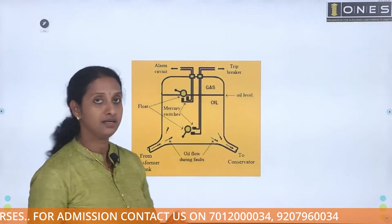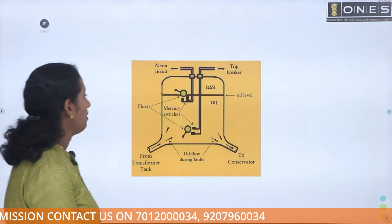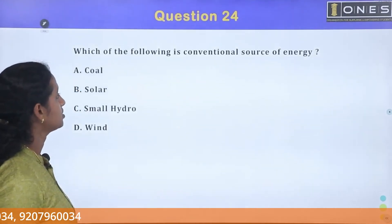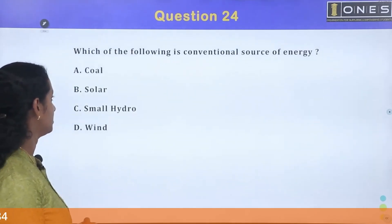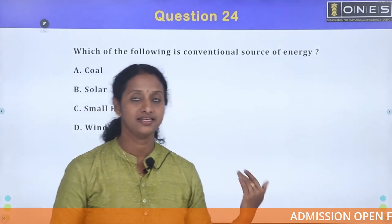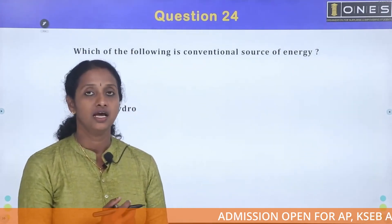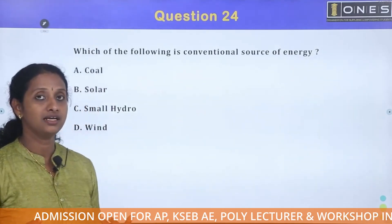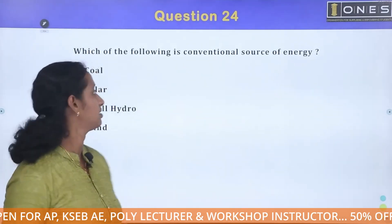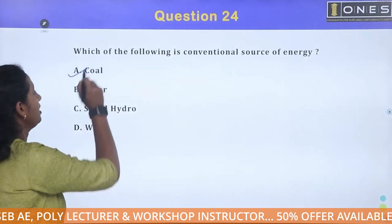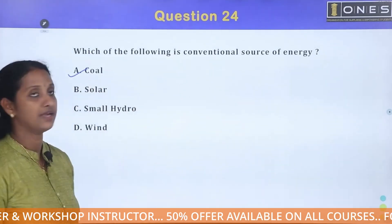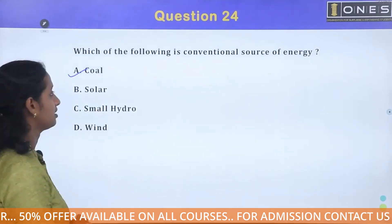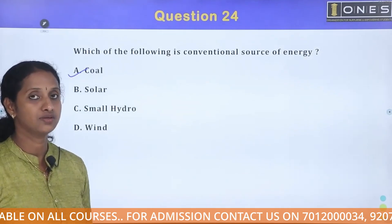Which of the following is a conventional source of energy? Conventional sources are inexhaustible or exhaustible — coal is the conventional source of energy. Solar, hydro, and wind are non-conventional sources of energy.